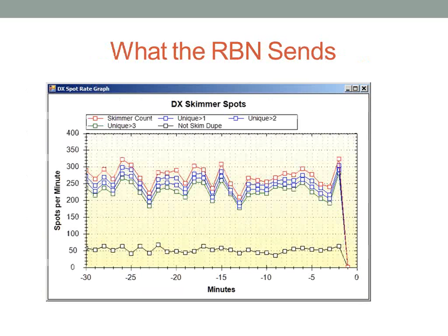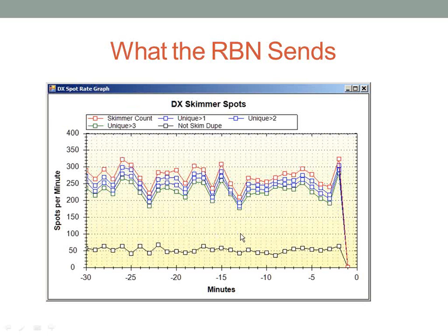This is an indication of what the RBN is sending at any given time. This line is absolutely every spot, duplicate or not, and these are various levels of validation — essentially waiting until the system hears the spots one, two, or three times. The line at the bottom is the non-dupes when it's all said and done. About one in six spots typically will be unique, or at least unique in the last 10 minutes.